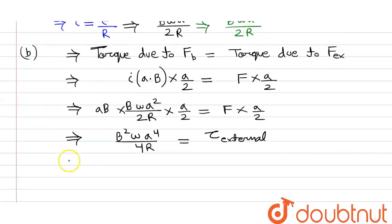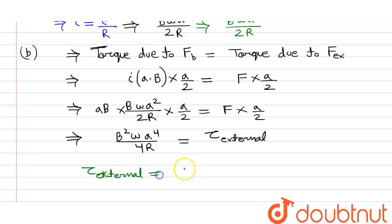So our final answer: the external torque required to rotate the rod OA with constant angular velocity omega is B²ωA⁴ / 4R.